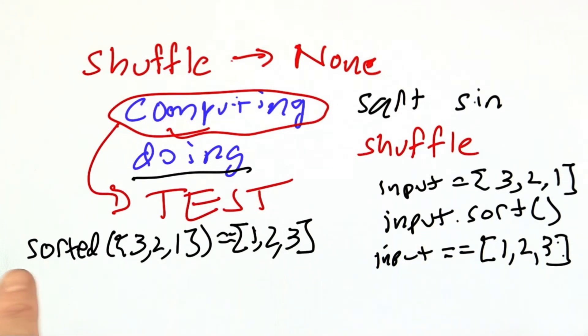With the built-in function, it's a single line to test. With the doing subroutine, it's three lines to test.